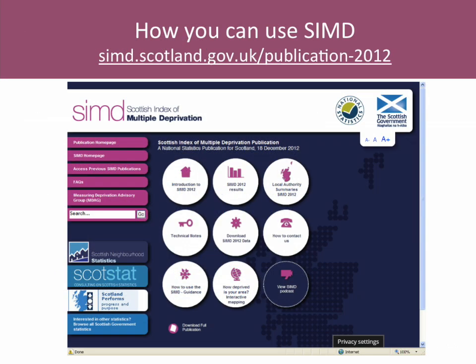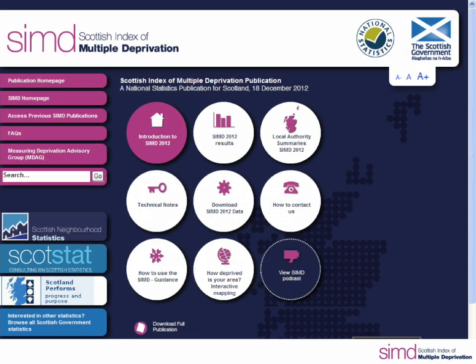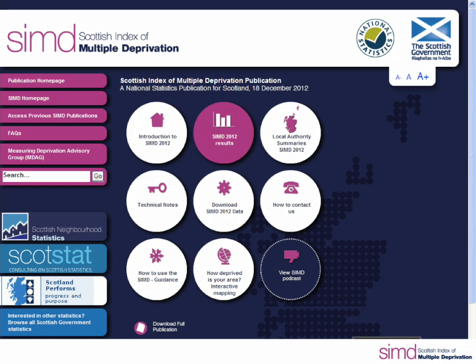Moving on to the look of the site — you can see the homepage here for the SIMD site. In the middle at the top is the headline results section, where key findings are presented for Scotland overall. It gives the overall picture for the SIMD, summaries for the seven domains, and helps understand the circumstances of people living in the most deprived parts of Scotland.